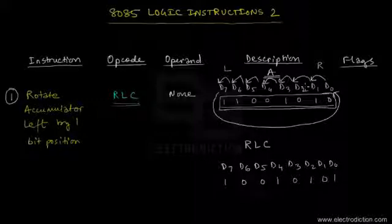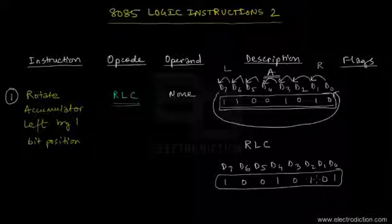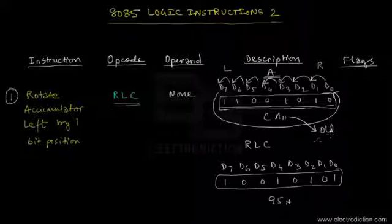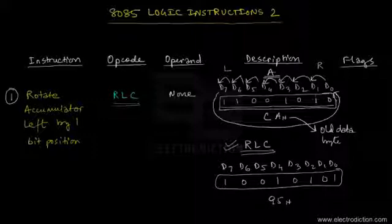After a rotation towards the left by one bit position, the new accumulator data content expressed in hex code is CAH — that was the old accumulator content. After executing the RLC instruction once, when all the data bytes shift towards the left by one bit position, the new data content of the accumulator expressed in hexadecimal is 95H. This is the new data byte currently in the accumulator.